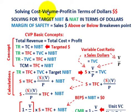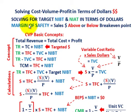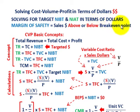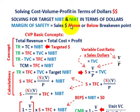What we're going to be going over here is solving a cost-volume-profit problem in terms of dollars. We're going to be solving for some targeted net income, either before taxes or after taxes in terms of dollars, but we're going to be doing it based on the margin of safety. We're going to see how the margin of safety fits into the net income we're looking at before and after taxes.